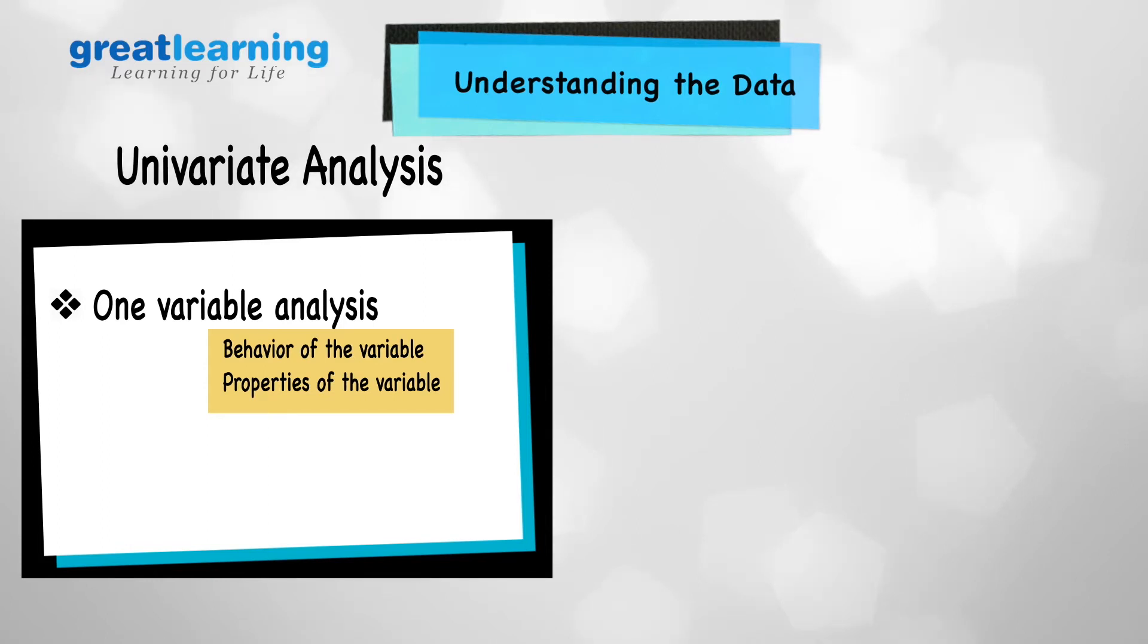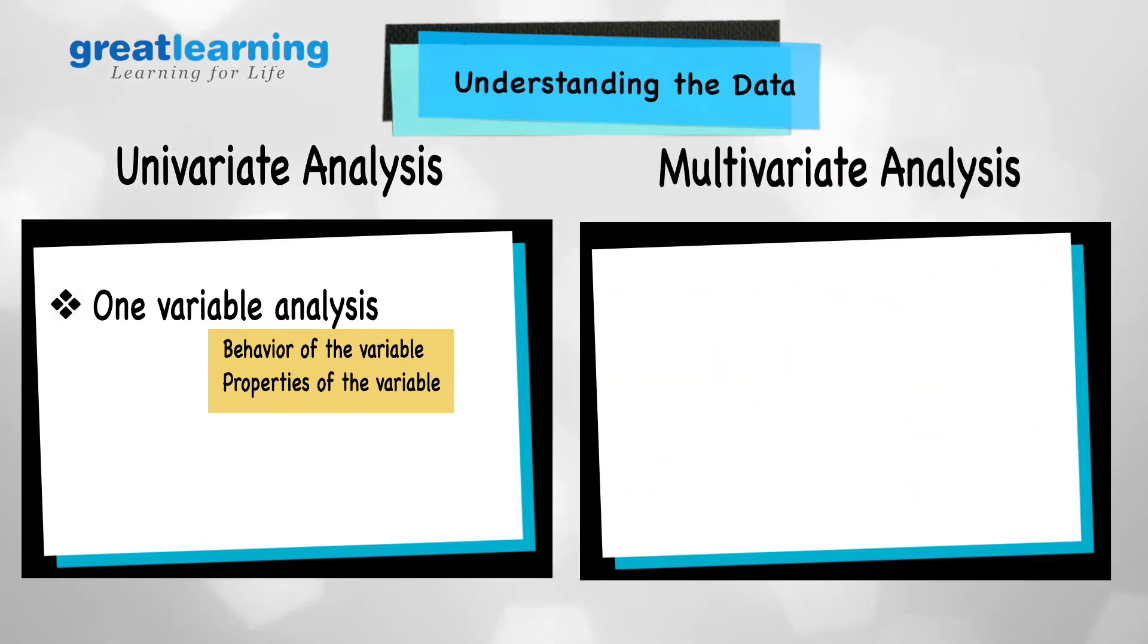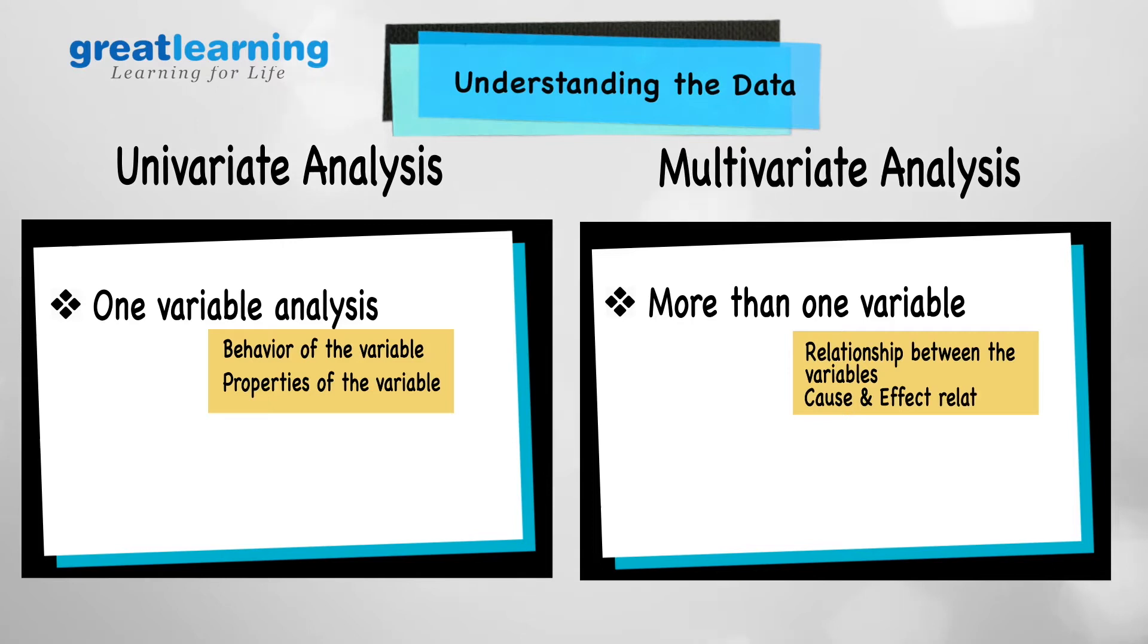What we also want to do in understanding the data is what is called a multivariate analysis. In a typical multivariate analysis, we are looking at the relationship between multiple variables. We are trying to find out if a particular variable is explaining, causing something else to happen, or is being caused by something else. These are the things which we need to understand the data.